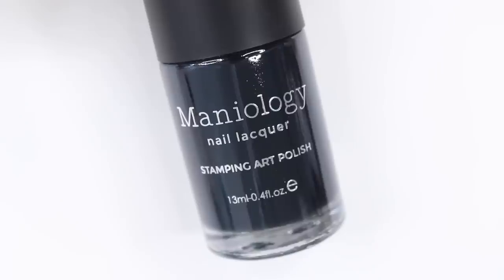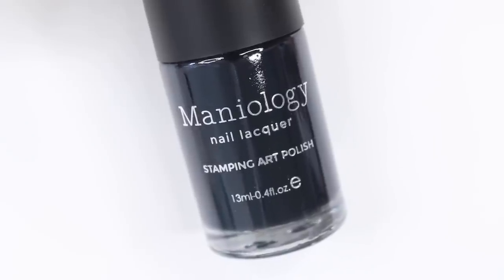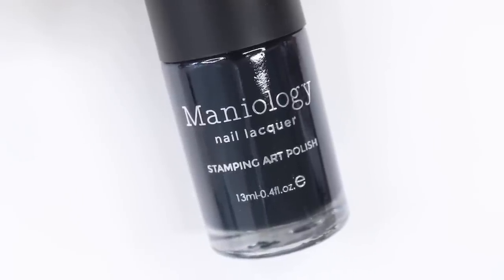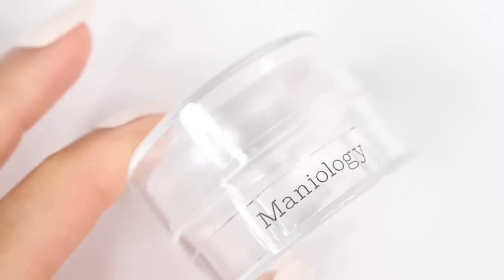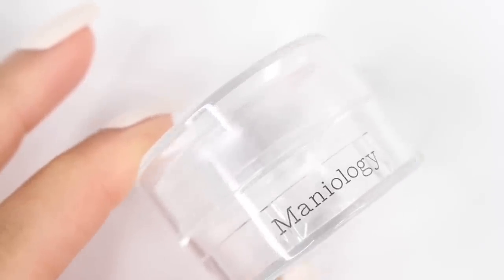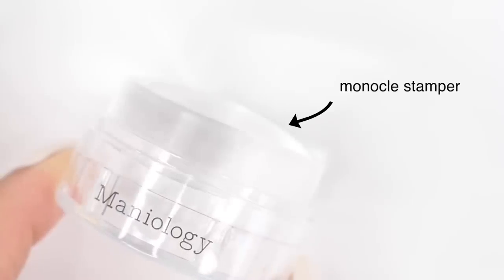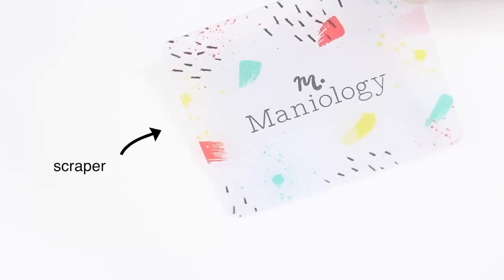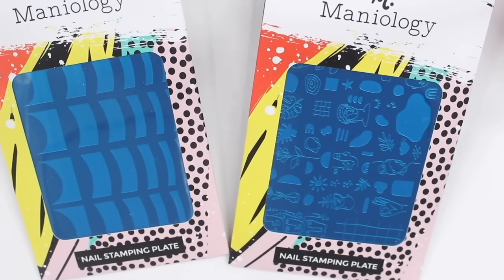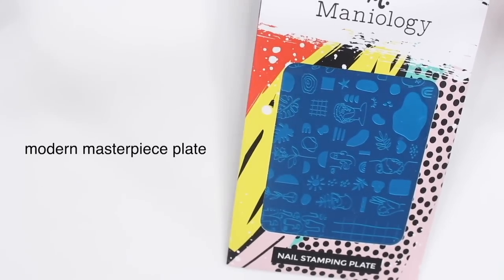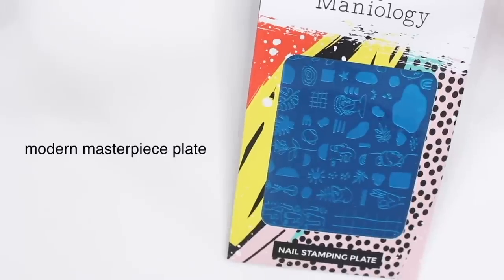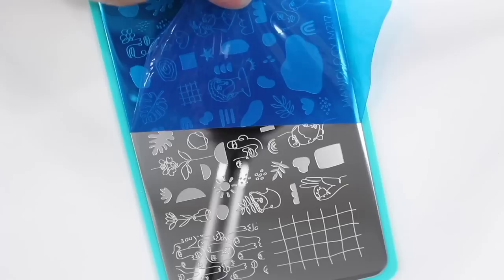So the products I'm using are from Maniology. This is their Perfect Trio Set, which comes with a smudge-free top coat, a black stamping polish, and a white one. Then for the stamper, I had no idea which one would be best for me, so I just went with the Monocle Stamper. This also comes with your scraper tool. And then of course we need some stamping plates, so I have the French Tip one and then also the Modern Masterpiece, which as soon as I saw this, I was like, this is the most me stamping plate ever.